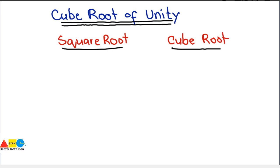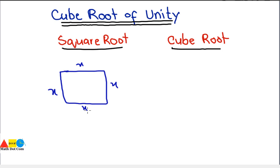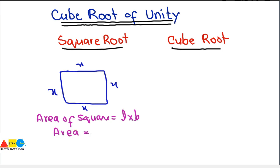We will start with an example. If you have a square with all sides equal to x, and you are given the area of the square, then the area of a square equals length times breadth, which is x times x, so area equals x squared. If the area is 9 but you don't know the side length x, then how will you find x? If area equals 9, we write x squared equals 9.